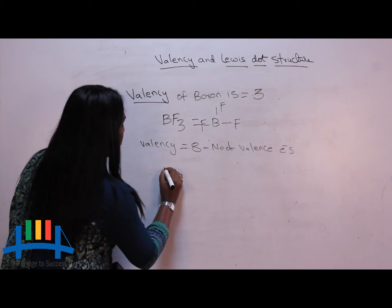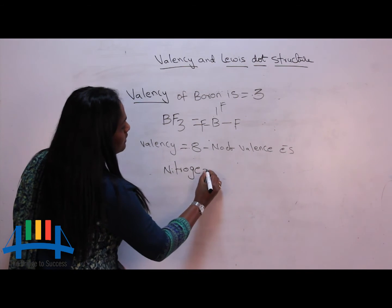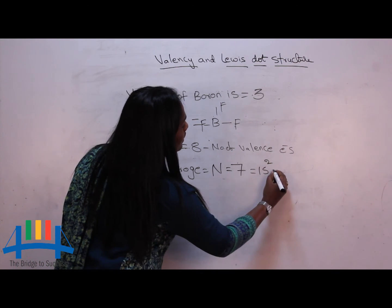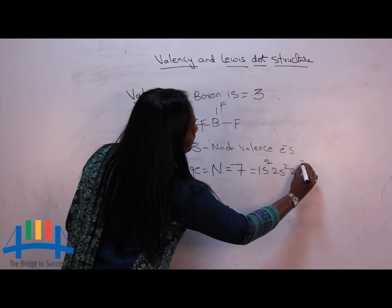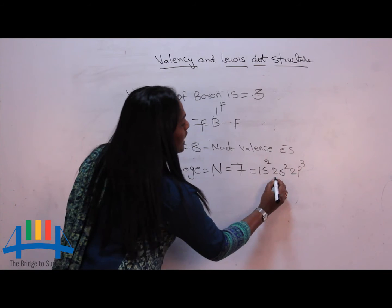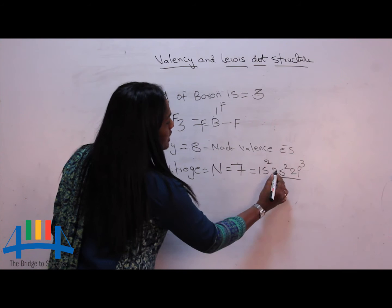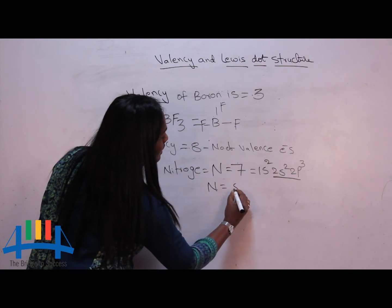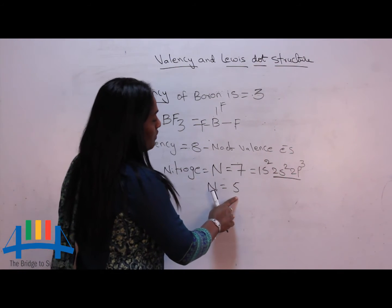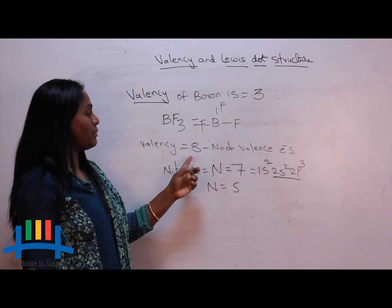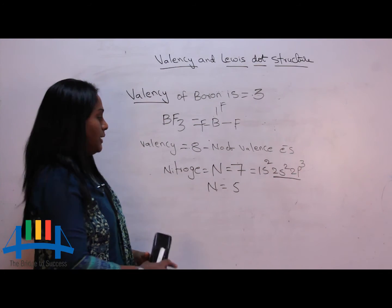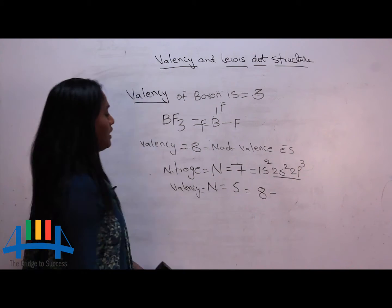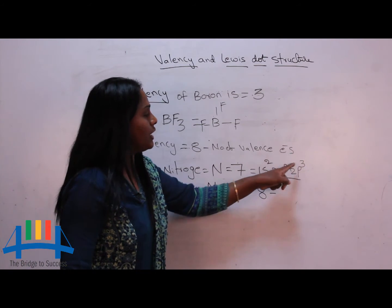Take one example: nitrogen. Nitrogen has atomic number 7. Let's write its electronic configuration: 1s2, 2s2, 2p3. What is its outermost shell? The second shell is its outermost shell. How many electrons are present in the outermost shell? 2 plus 3, that is equal to 5. So valence electrons of nitrogen are 5. Since valence electrons are greater than 4, we apply the formula: 8 minus number of valence electrons.